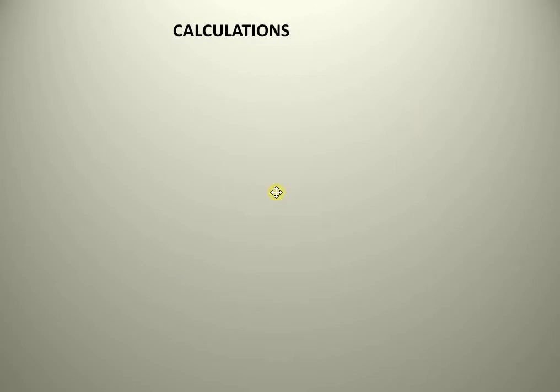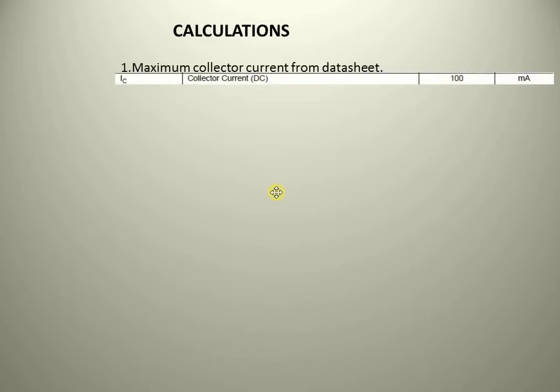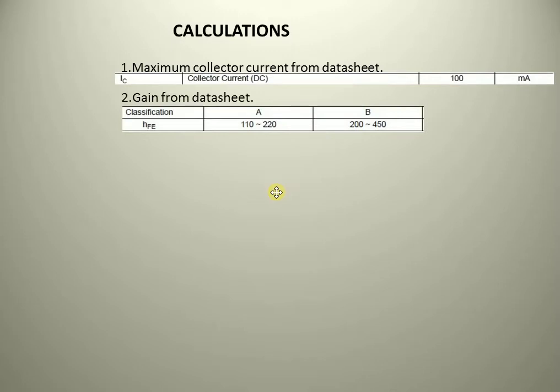From the datasheet of BC548B, it can be seen that the maximum collector current allowed is 100mA, so I need to calculate the base current accordingly. From the datasheet, it is also given that HFE or the gain of the transistor is 200 to 450 for B classification. I am taking BC548B, so in my case the gain is between 200 and 450. As an average, I will be taking 325 as the gain.